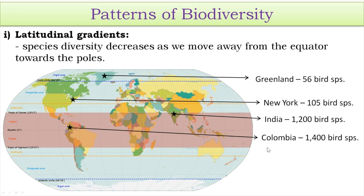To elaborate this pattern, examples are given in your textbook. Colombia, located in South America near the equator within the tropical zone, has about 1,400 different species of birds — quite a high number. Moving north to New York State in the temperate zone, there are about 105 bird species. Moving further north to Greenland in the frigid or polar zone, there are only 56 bird species. This shows that species diversity decreases as we move away from the equator towards the poles.